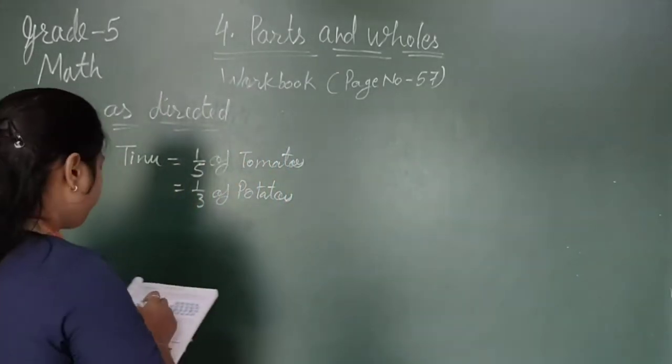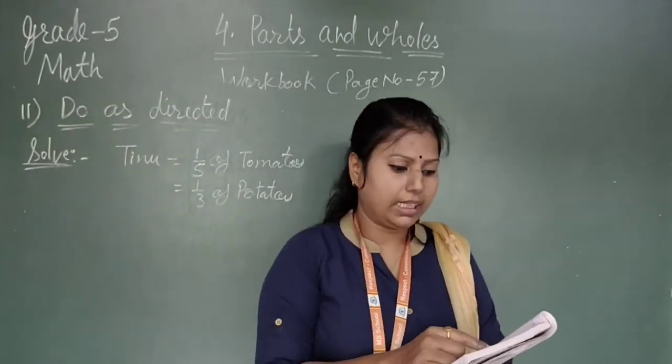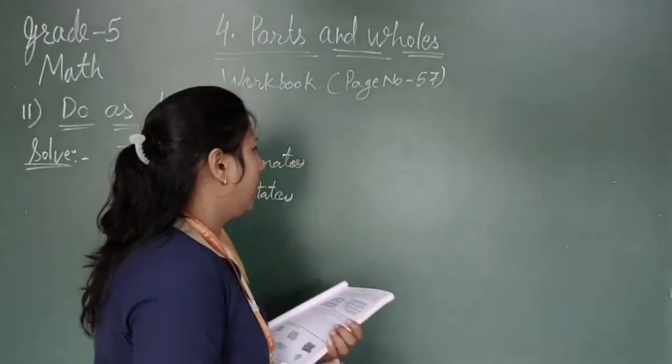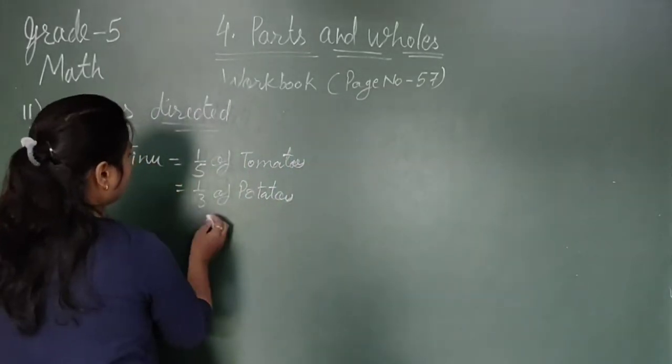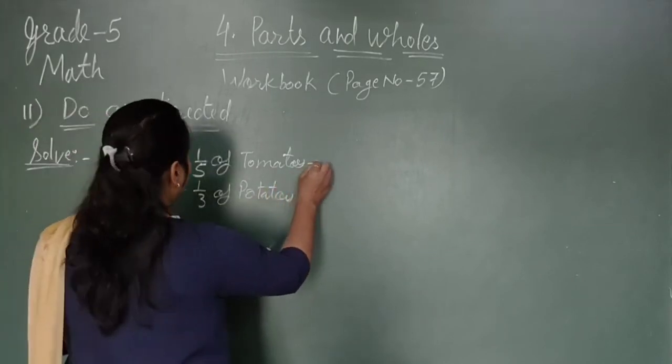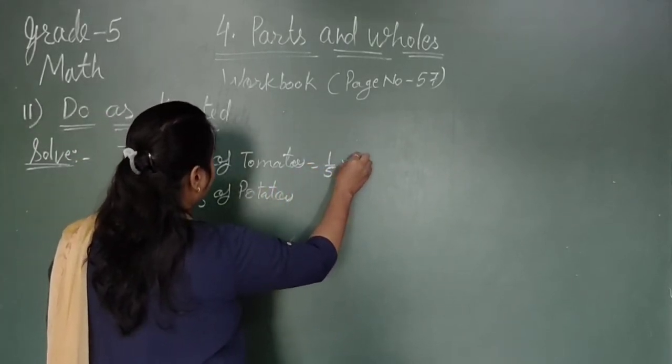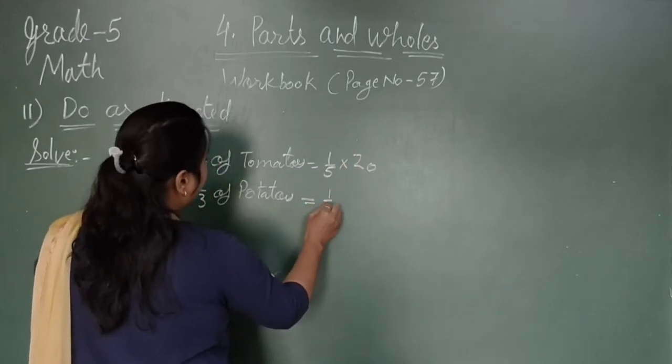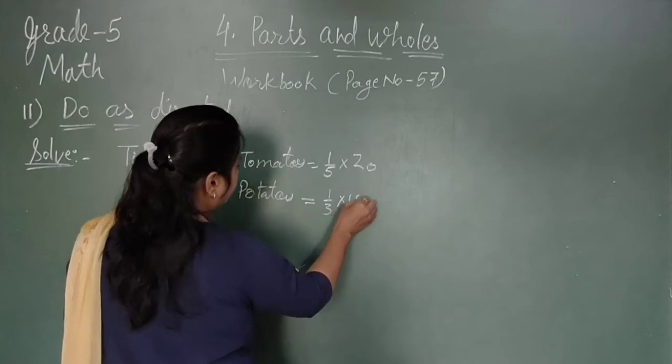So we have to count 1, 2, 3... up to 18 potatoes and 20 tomatoes. So we have to solve one-fifth of tomatoes means 20, and one-third of potatoes which is 18.